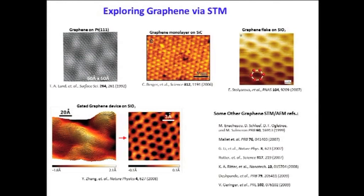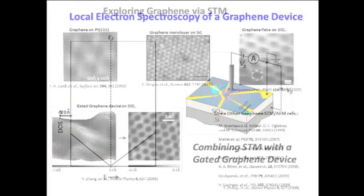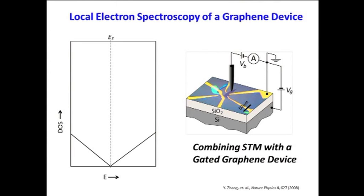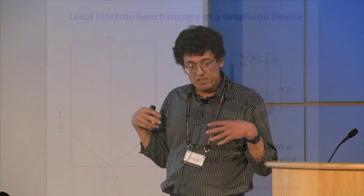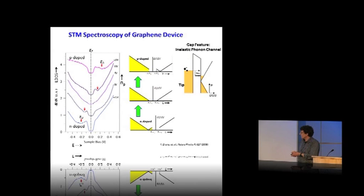In my own group, we're very interested in using STM to perform local spectroscopy on graphene. A few years ago, we set out to perform STM spectroscopy on gated graphene devices. This is a photograph of a little device we made with Alex Zettel's help — a graphene flake that we can gate from the back and perform STM spectroscopy. What we expected to see was a V in the local density of states in the dI/dV, because the local density of states often mimics the total density of states, which is linear for graphene. But when we did the experiment, that's not what we saw.